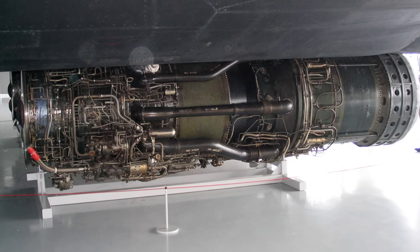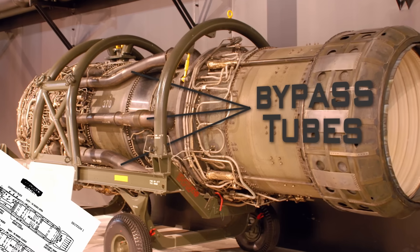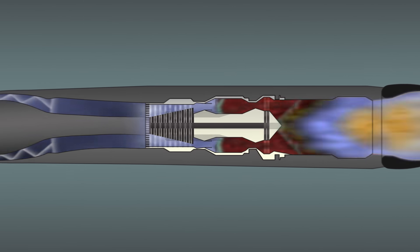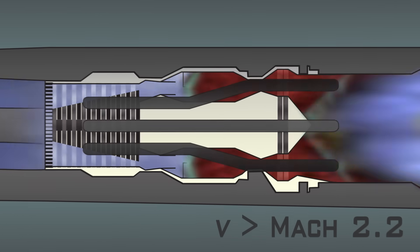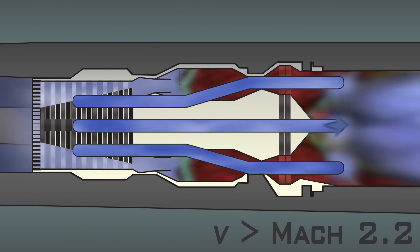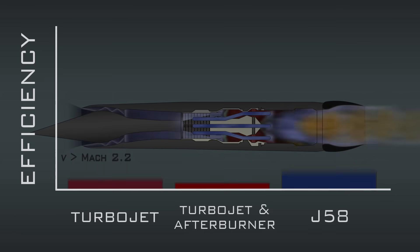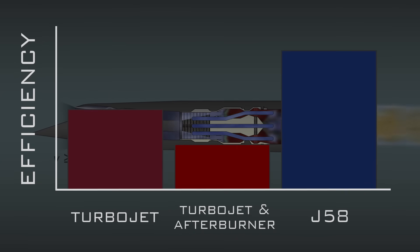What makes the J58 engine so different than all other turbojets are these six bypass tubes, which you don't find on these diagrams. The tubes open when the plane is flying at speeds greater than Mach 2.2, moving compressed air from the fourth stage of the compressor directly into the afterburner. This allows the engine to act more like a ramjet, which allows the SR-71's afterburner to operate at a much higher fuel efficiency.